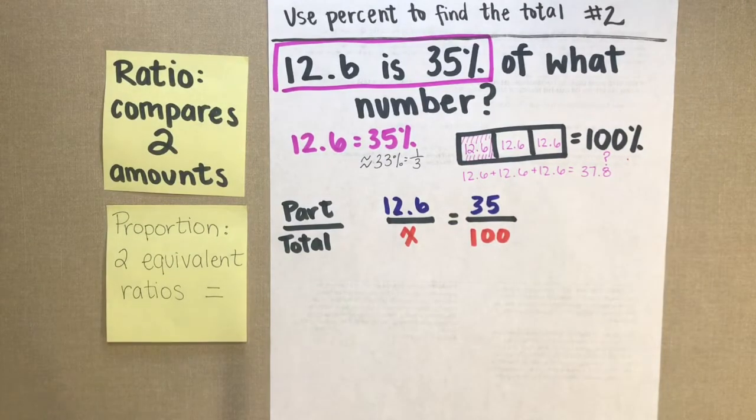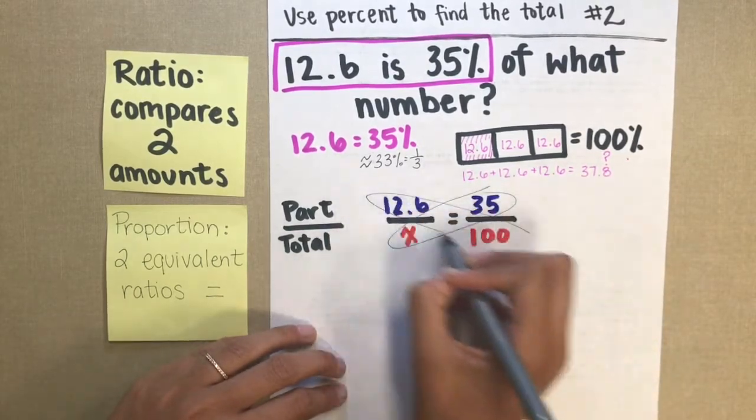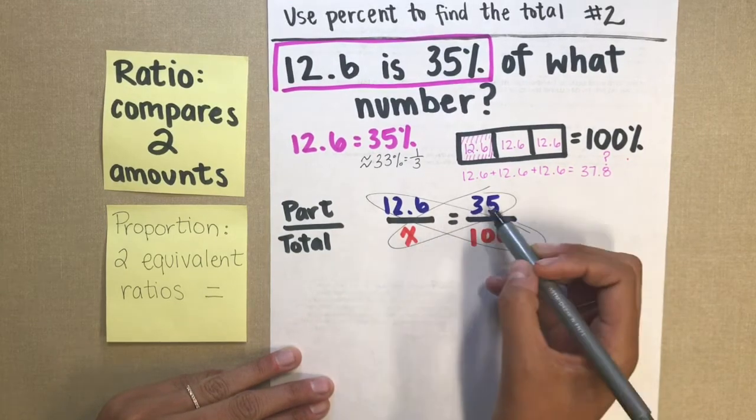And now all we need to do is solve. The method that we're going to use to solve is to cross multiply and divide. I'm looking for the value of this x. So when I cross multiply...